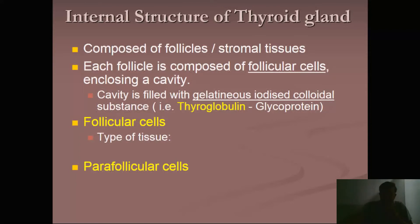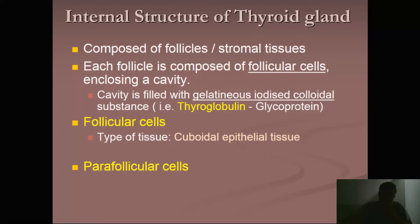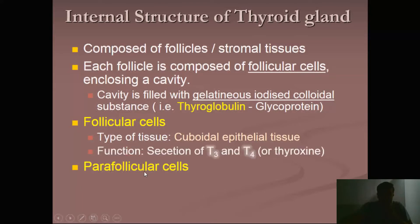Can you guess the type of tissue forming the follicular cell? Wherever you have the function of secretion, it is definitely epithelial tissue — glands are always modified epithelia. Mucus-secreting cells are columnar epithelia, but otherwise, whenever there is a function of secretion, it has to be cuboidal epithelia. Here it is in one layer, so it is simple cuboidal epithelial tissue which makes up the follicular cells.